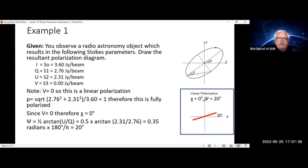If we do I equals 3.6 Jansky per beam, which is a common unit value for these observations, Q equals 2.76 Jansky per beam,